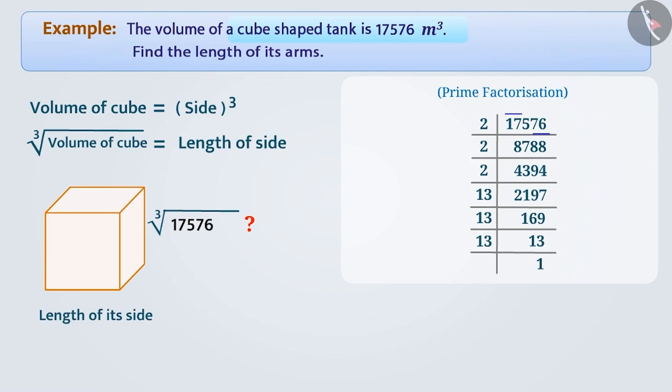Like here, we will divide 17,576 by 2, 2, 2, 13, 13, 13 respectively. In the last stage, we are getting 1, so here we will stop.